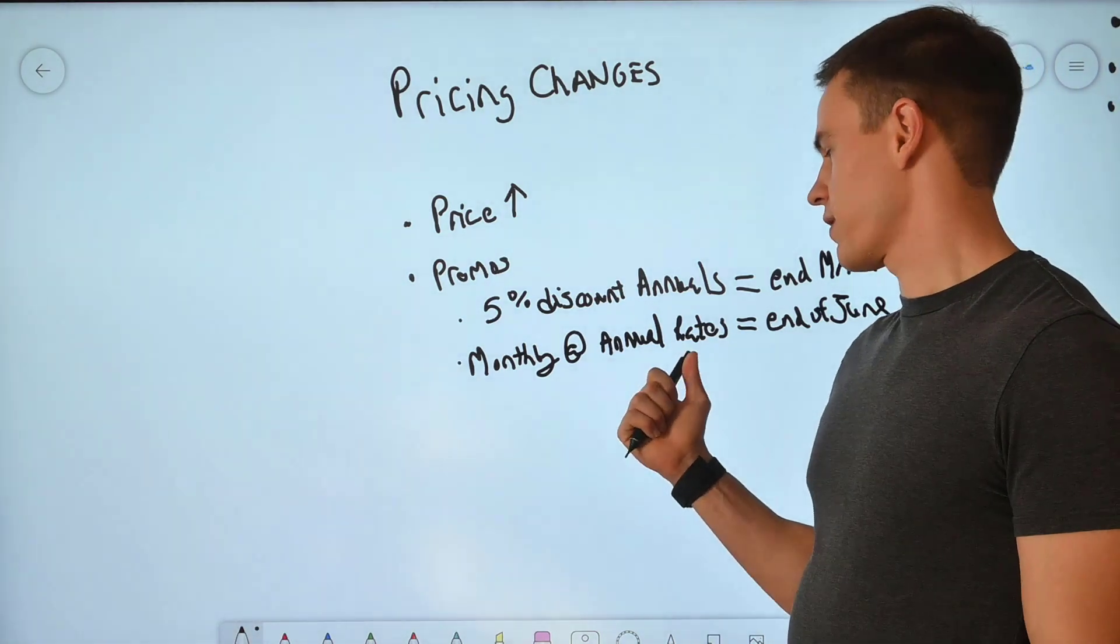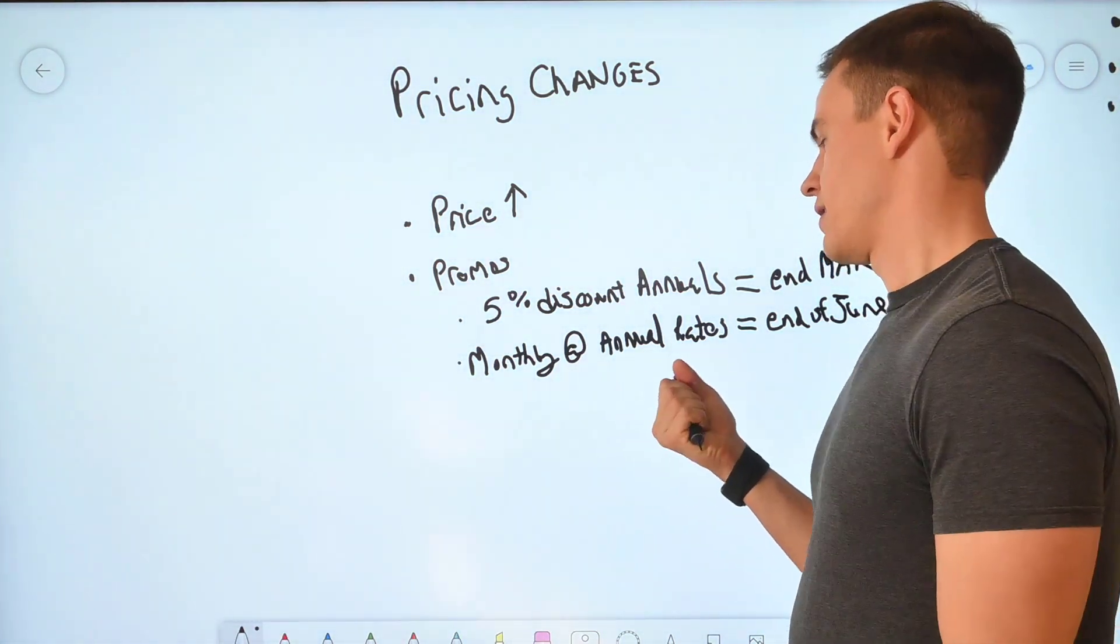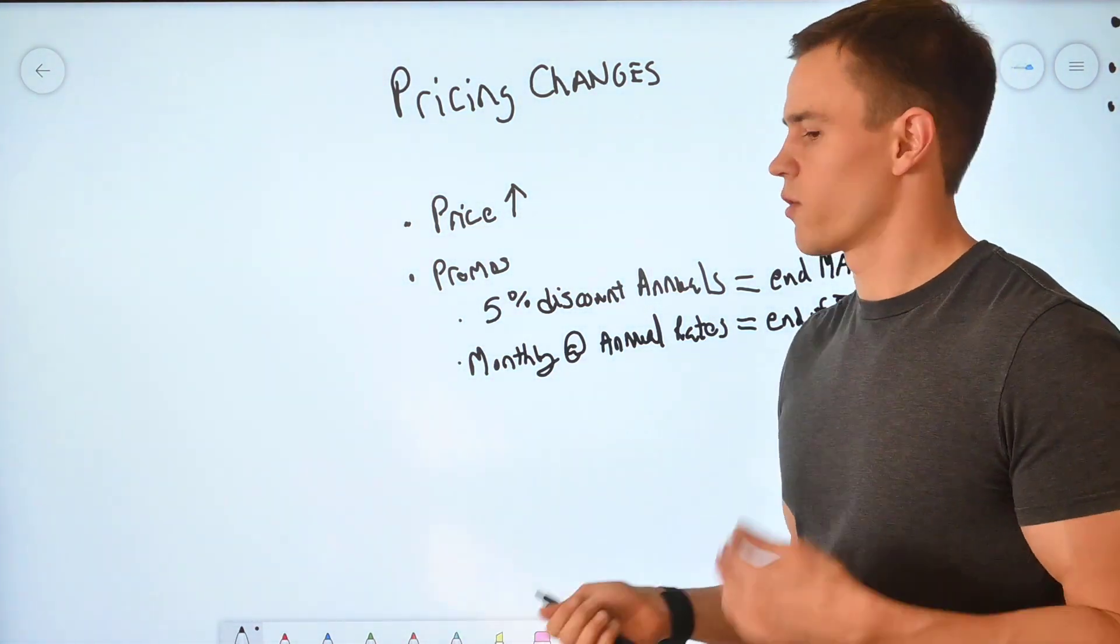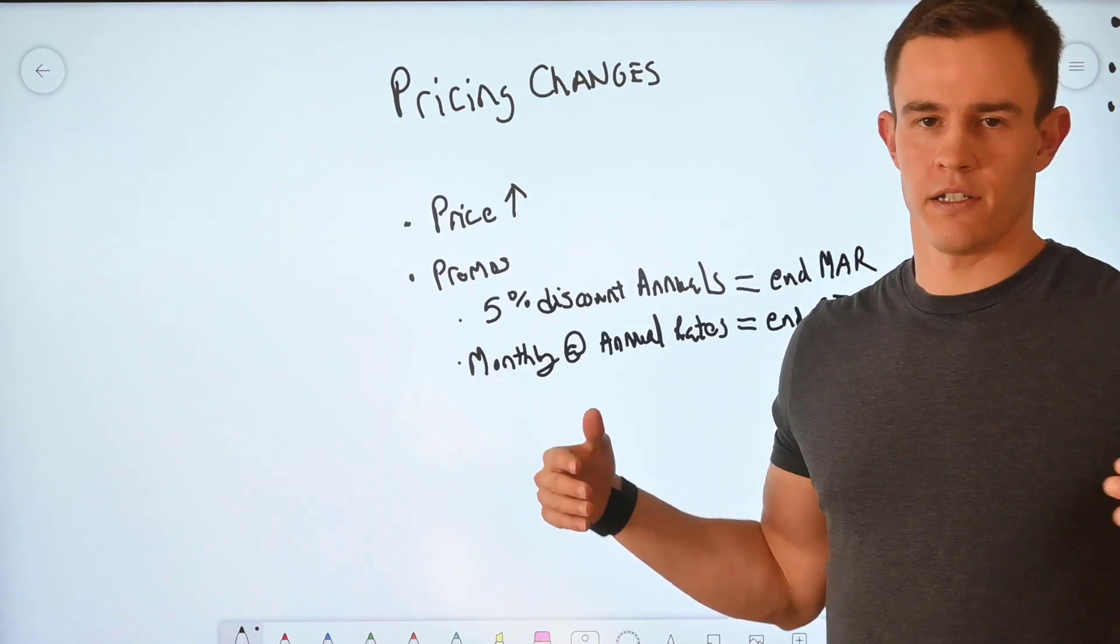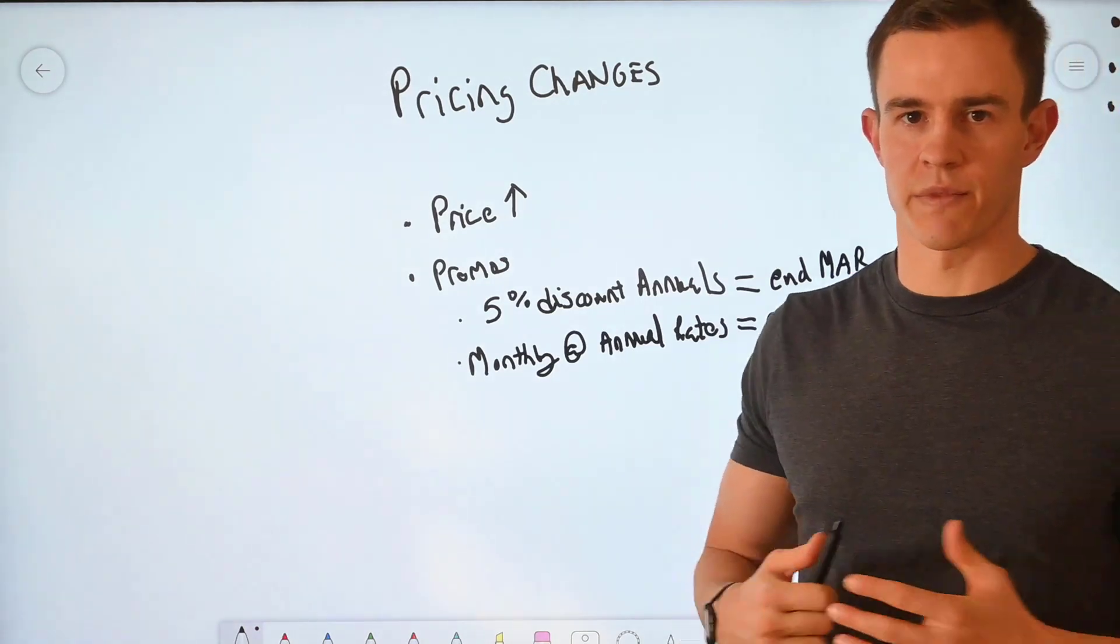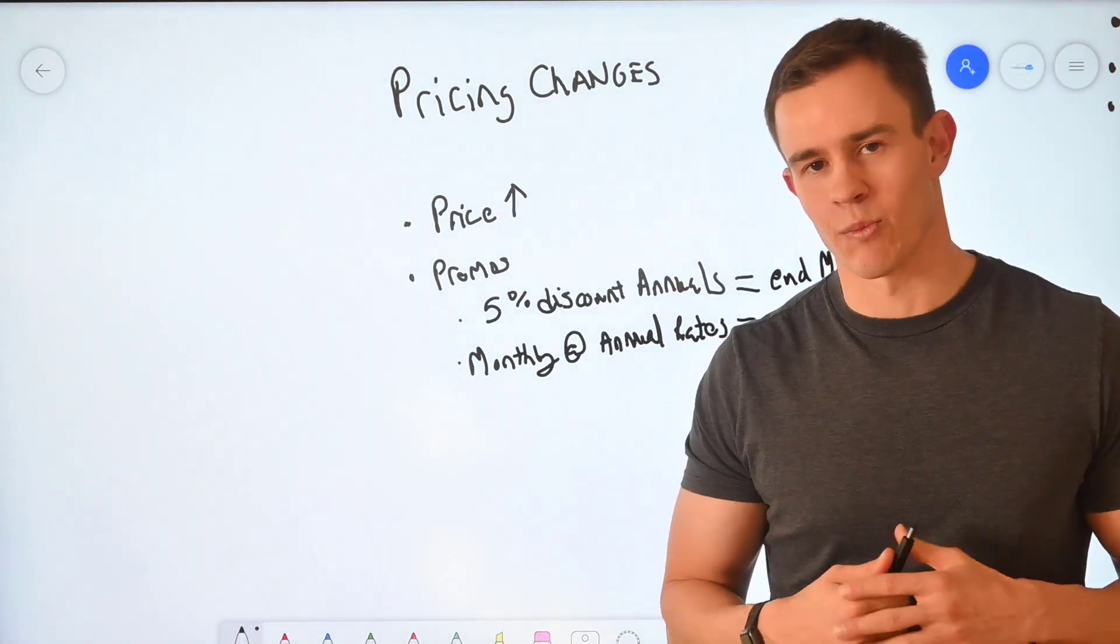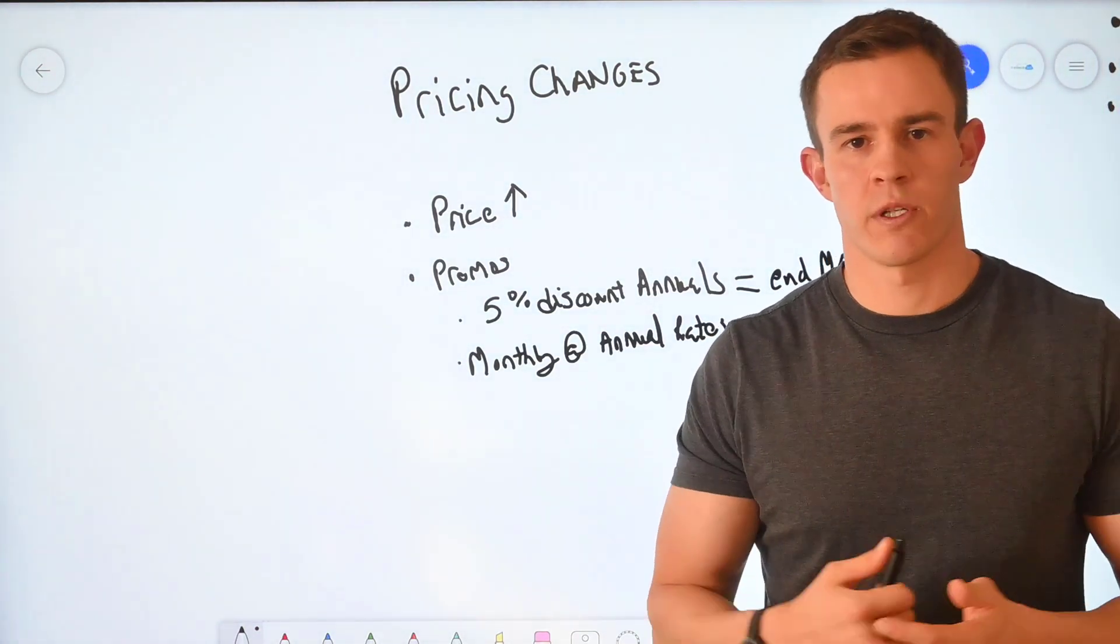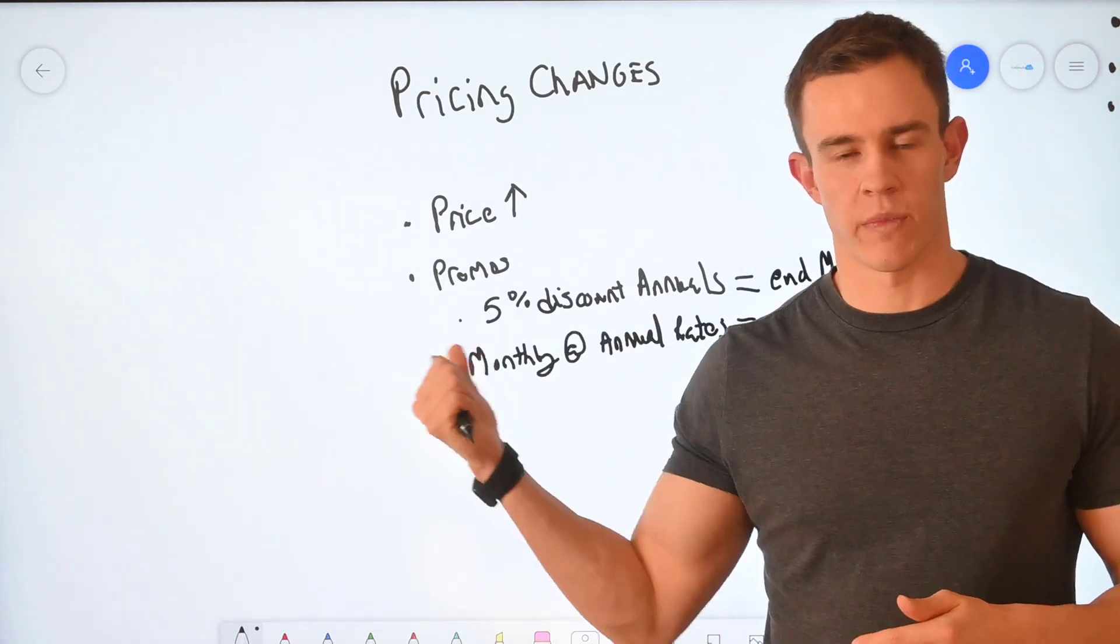You could do the same with the monthlies at the annual rates until June or July, or you could just go across all of your clients and make sure that you have that 20% premium now baked into those line items after that promotion is completed.